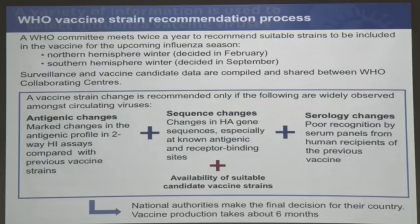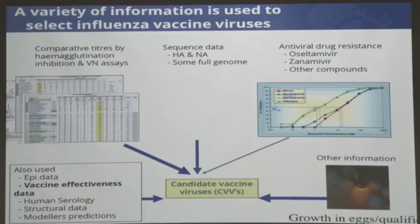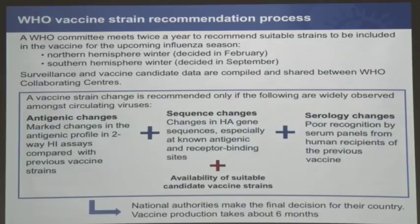If the vaccine virus should be changed, we also collect information about whether the virus grows well in eggs, because 95% of the world's vaccine is manufactured in eggs. The committee meets twice a year: once in February for the Northern Hemisphere vaccine recommendation, and in September for the Southern Hemisphere.